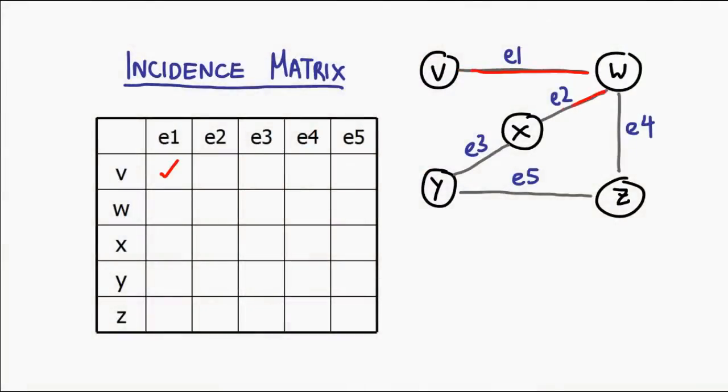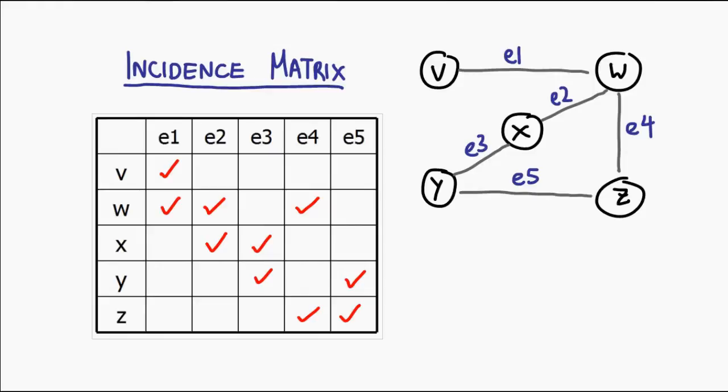Now let's look at our third technique, which is called an incidence matrix. This one is interesting — instead of having all vertices, we actually have vertices and edges in our matrix. What we note is whether an edge is incident or connected to a vertex, and that's how we figure out the connectivity of everything in the graph. An incidence matrix shares a problem with the adjacency matrix: if we were to add a new vertex or a new edge, we actually have to resize the entire matrix. You can see why — we're adding more rows or more columns. This is generally non-trivial in a lot of programming languages because resizing doesn't just happen instantly. You have to allocate new space, copy all the information from the old matrix to the new one, and that could be very slow.